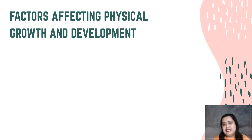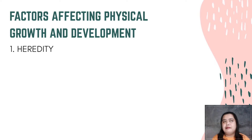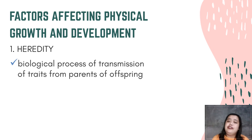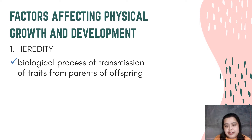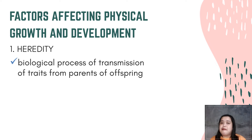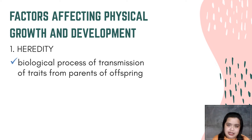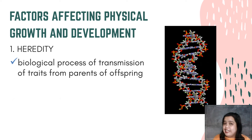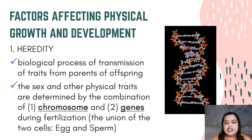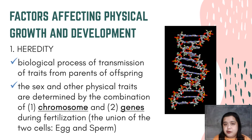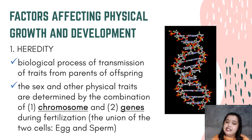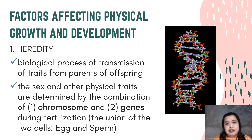Let's go through the factors one by one, starting with nature. Nature is focused on heredity — the biological process of transmission of traits from parents to offspring, meaning from parents to children. Our traits and characteristics are passed on through DNA. Sex and other physical traits are determined by a combination of chromosomes and genes. This happens during fertilization, the union of the egg and sperm cell.